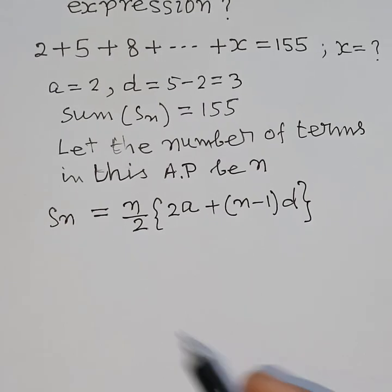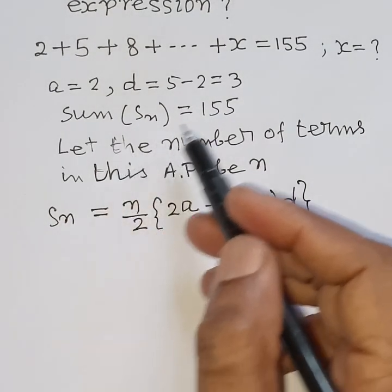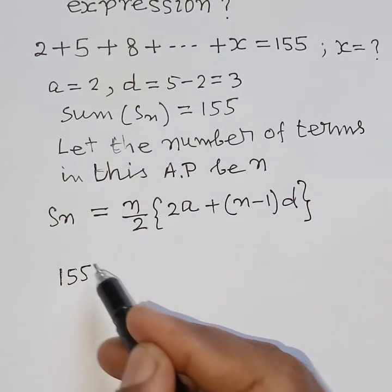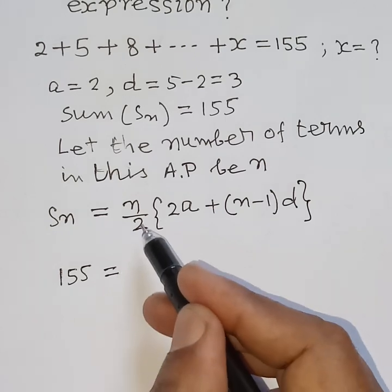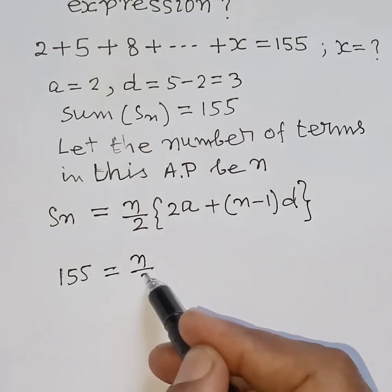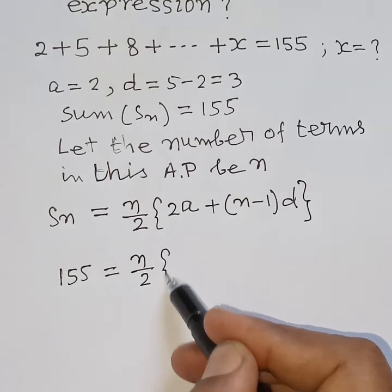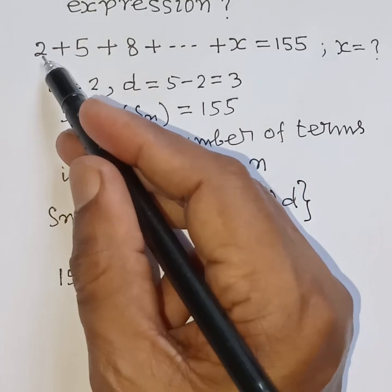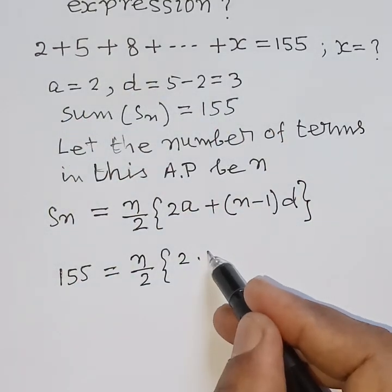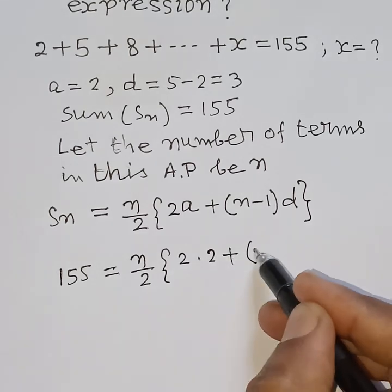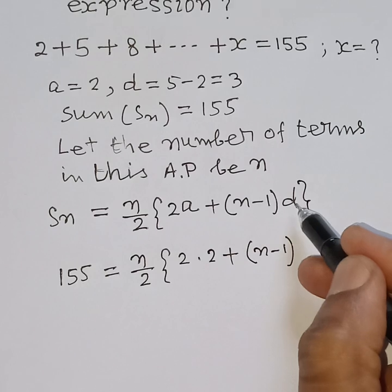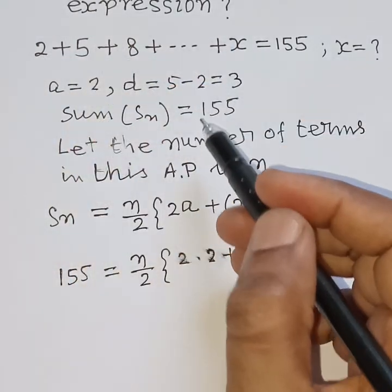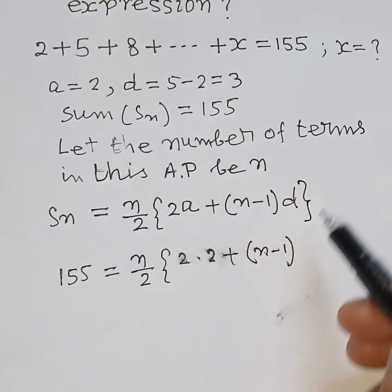Therefore, Sn is equal to 155. So 155 is equal to n by 2 into twice a, where first term a equals 2, plus n minus 1 into common difference d equals 3.